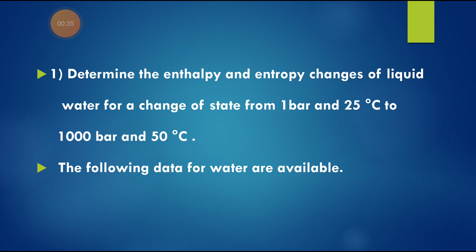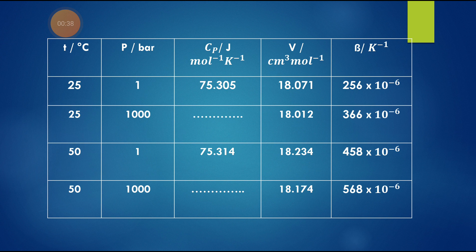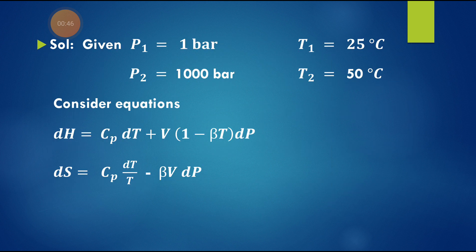The following data for water are given: temperature, pressure, CP, volume, and beta in the data table. The given values are P1 equal to 1 bar, T1 is 25 degrees centigrade. Similarly, P2 is 1000 bar and T2 is 50 degrees centigrade.